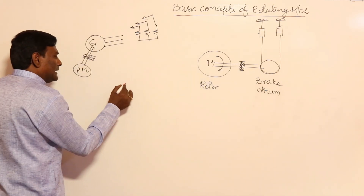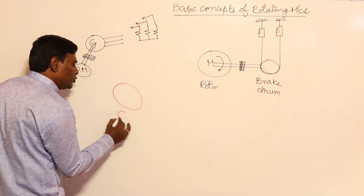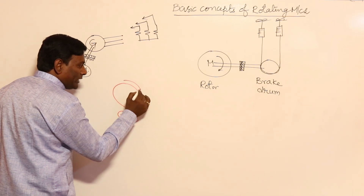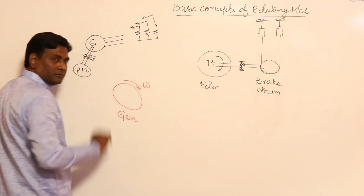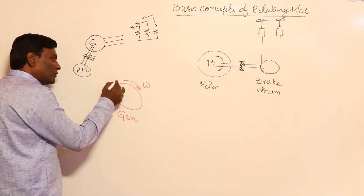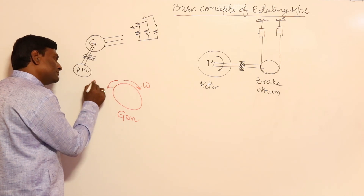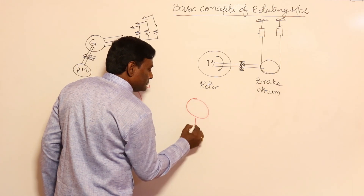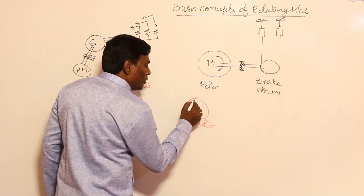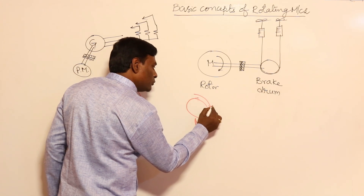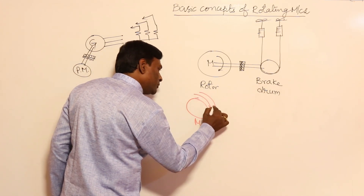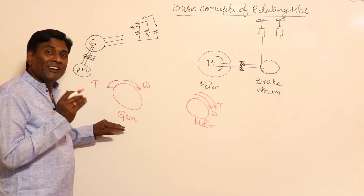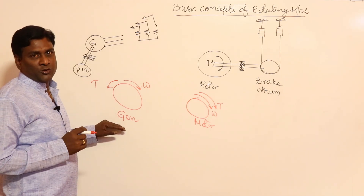This is universal. In a generator, if the direction of rotation is omega in this direction, the torque developed must be in the opposite direction. In a motor, if the rotor is rotating in this direction, the torque developed is also in the same direction as omega. This is the basic fundamental principle before entering into actual machines.